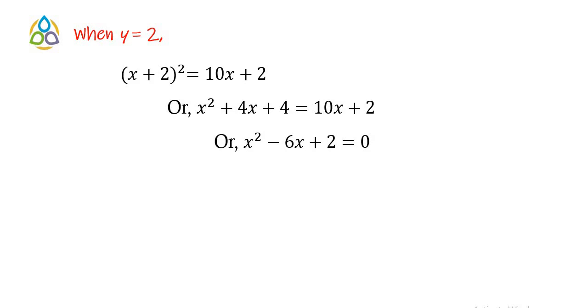Now what about y equal to 2? When y equal to 2, the equation takes the form x plus 2 whole square equal to 10x plus 2. Expanding, x squared plus 4x plus 4, right hand side 10x plus 2. And ultimately, after transposing to the left hand side, we get x squared minus 6x plus 2 equal to 0.